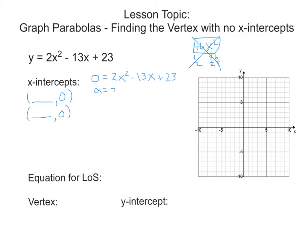So a equals 2, the number in front of x squared; b equals negative 13; and c equals 23. Go ahead and use the quadratic formula and solve this — we should all be practicing that as we go.